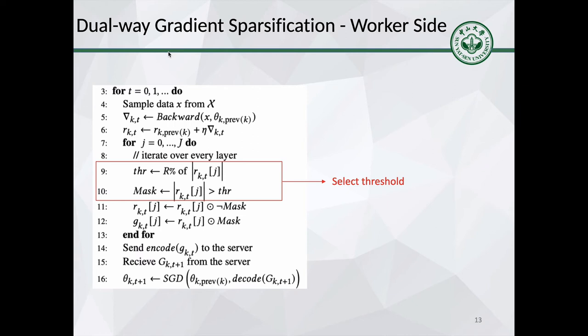In the worker side, we can simply regard the model difference as accumulated gradients. First, the worker receives gradients and updates its local model. Second, the worker fetches data and computes gradients. Third, it selects top K percent gradients, and finally the worker sends selected gradients to the server.